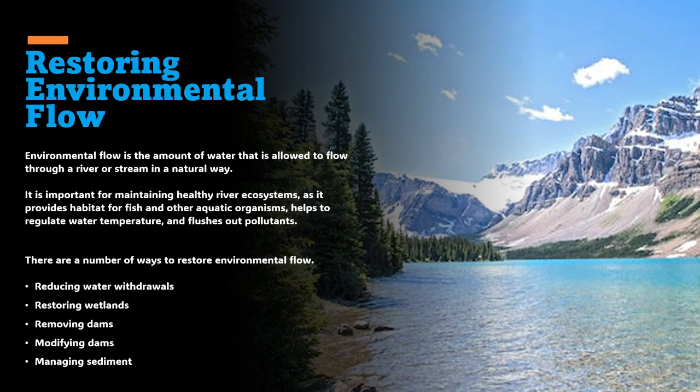Sediment management can be done by releasing sediment from reservoirs or other water bodies, or by planting trees and shrubs along the river banks. Restoring environmental flow is an important step in protecting water ecosystems. By taking these steps, we can help to ensure that rivers continue to provide the many benefits they offer, such as clean drinking water, habitat for fish and other wildlife, and opportunities for recreation.